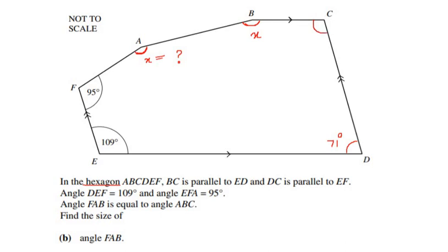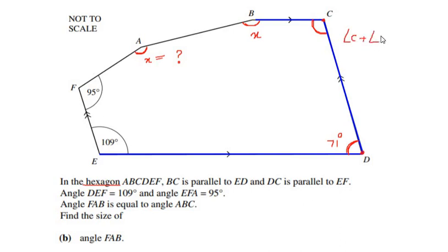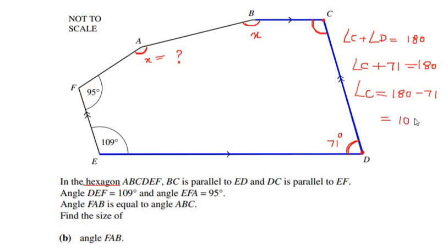Now let us find angle C. Line BC is parallel to ED, and line CD acts as a transversal between the two parallel lines BC and ED, cutting them at points C and D. So angle C and angle D are co-interior angles. Therefore angle C plus angle D equals 180 degrees. Since angle D is 71 degrees, angle C equals 180 minus 71, which is 109 degrees.